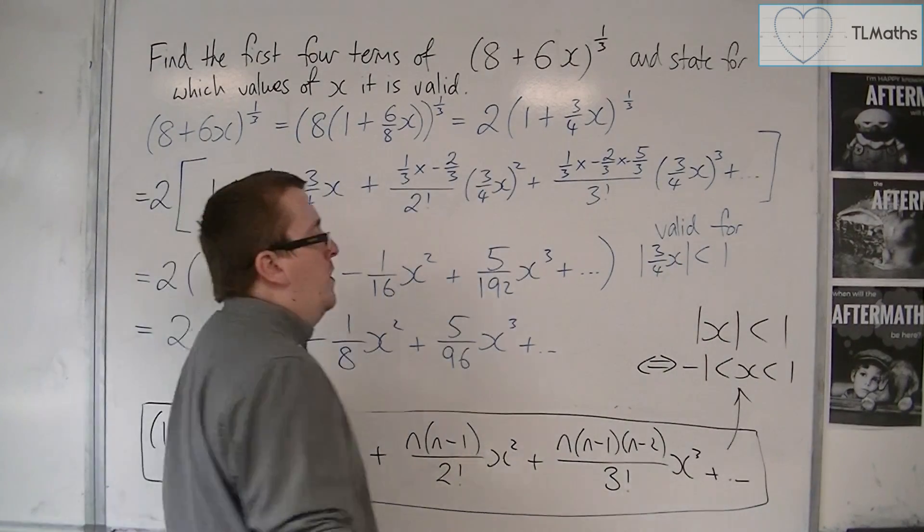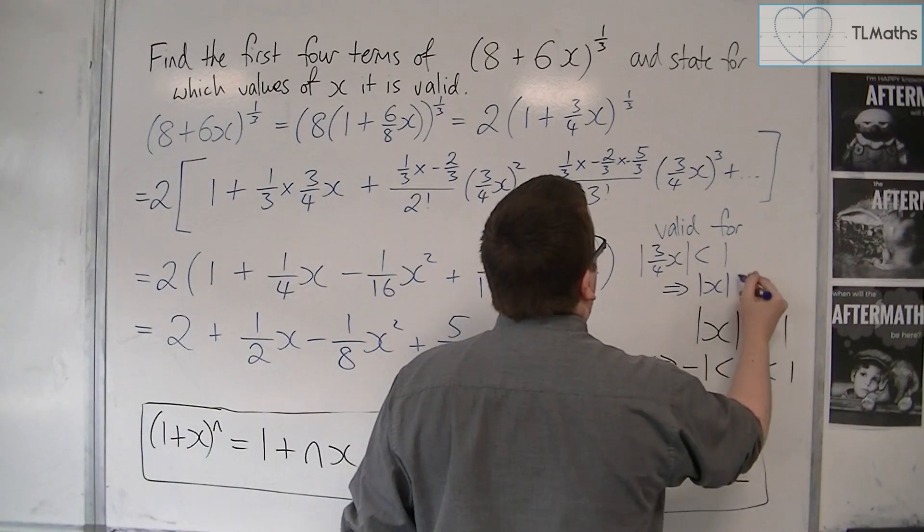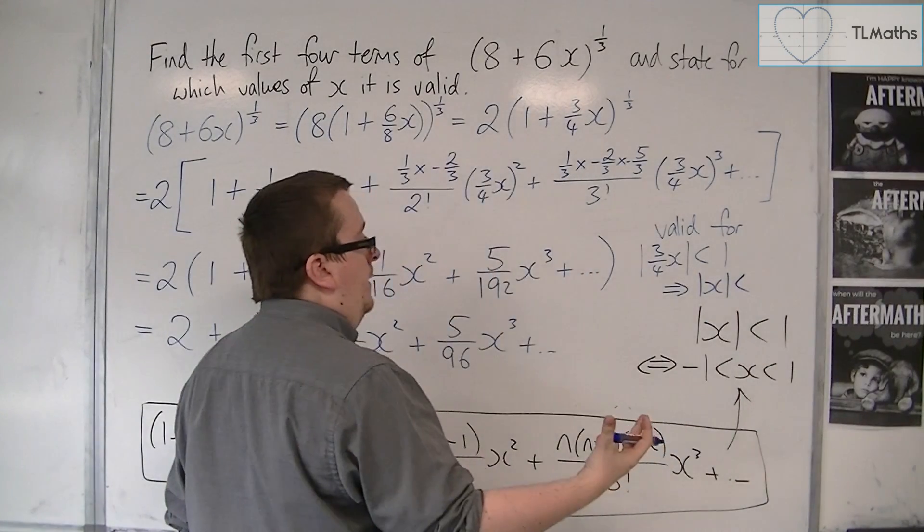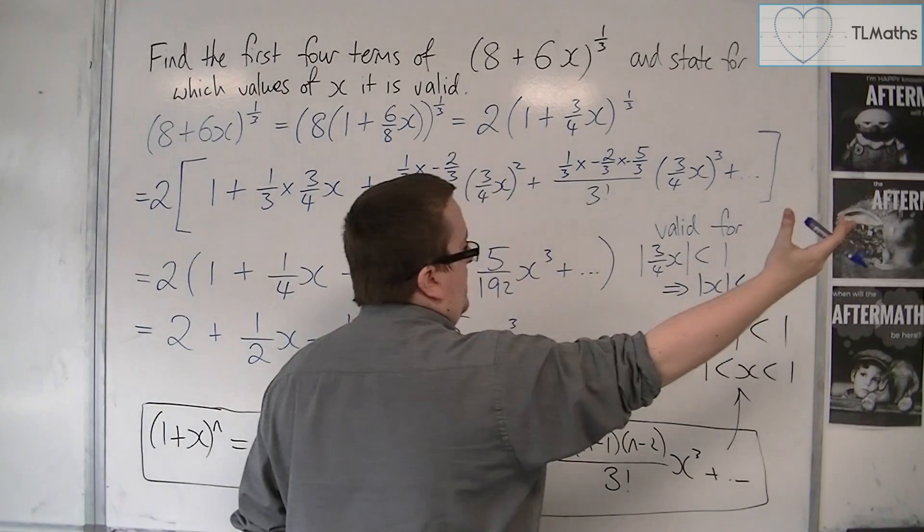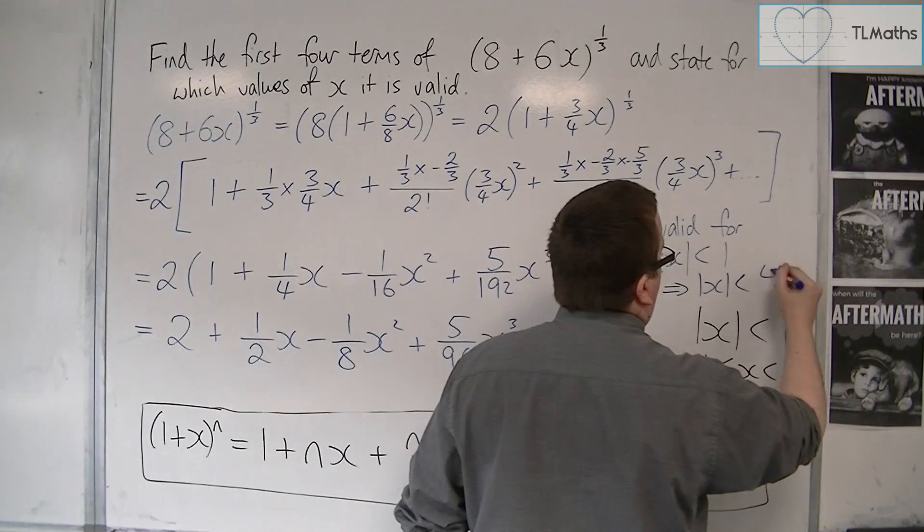So this is valid for |3/4 x| < 1, but you don't want to finish writing it like that. You want to write it as |x| < what, so you would divide both sides by 3/4, or multiply both sides by 4/3, whichever you prefer.